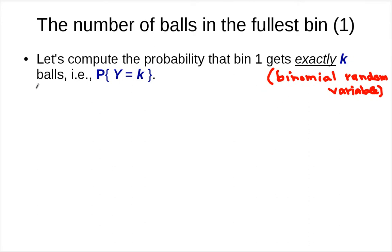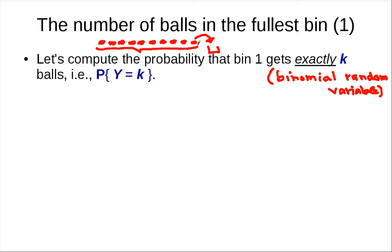So bin 1 — there are n balls. We can think of this as each ball picking bin 1 with probability 1 over n. So if you want to get exactly k balls, then there are n choose k possible outcomes, since out of n balls, k must pick bin 1.